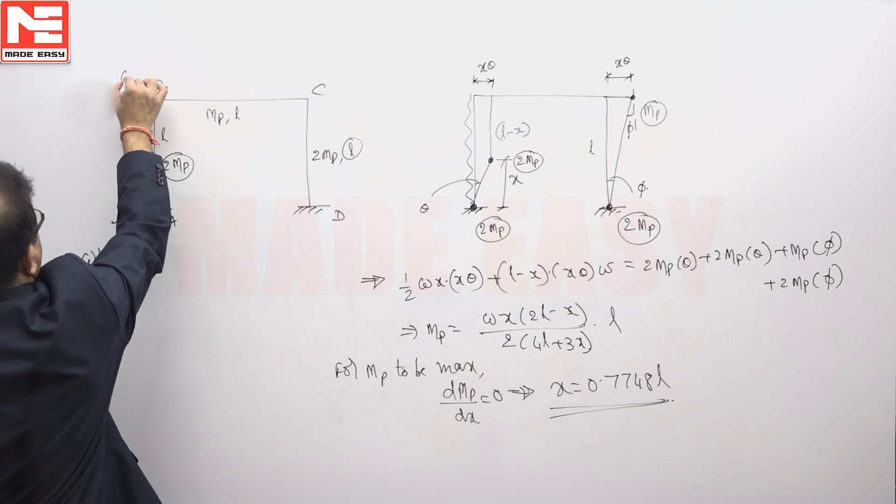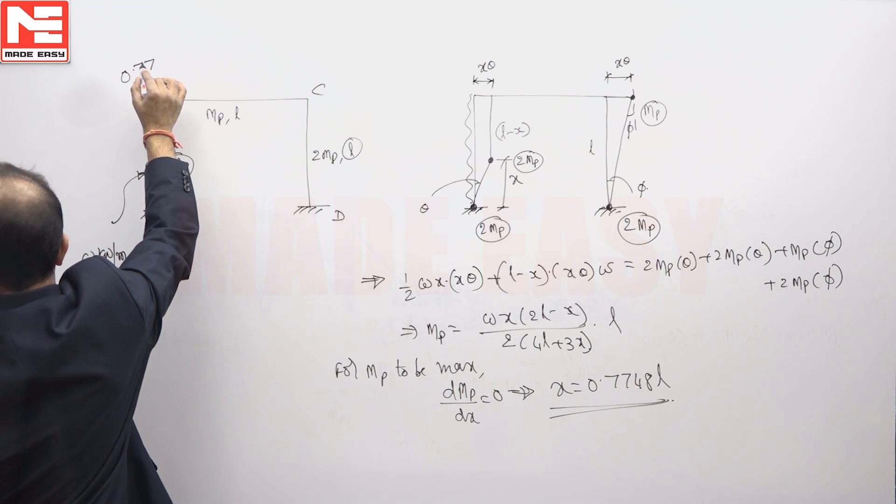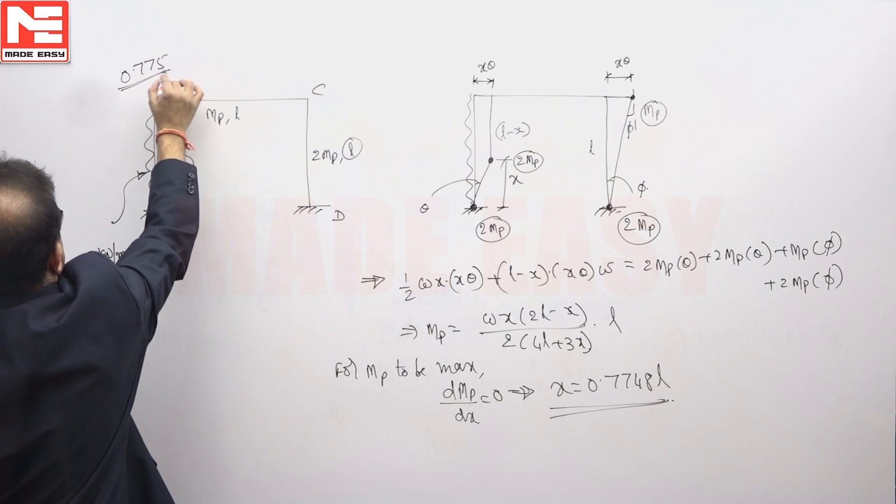So X value you will get 0.7748, means you can take it as phi.